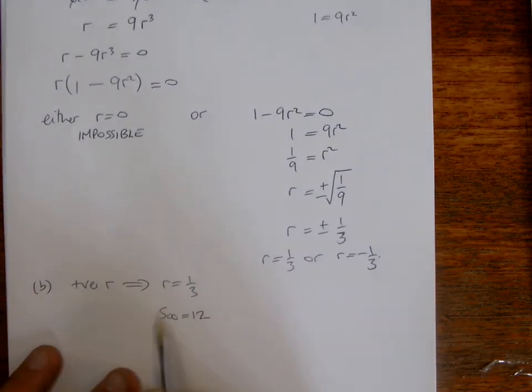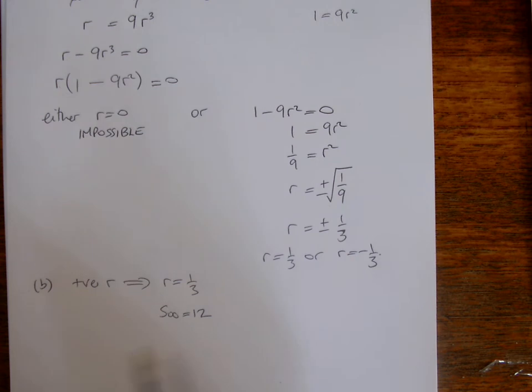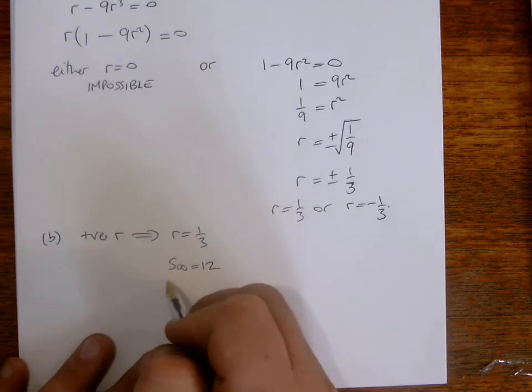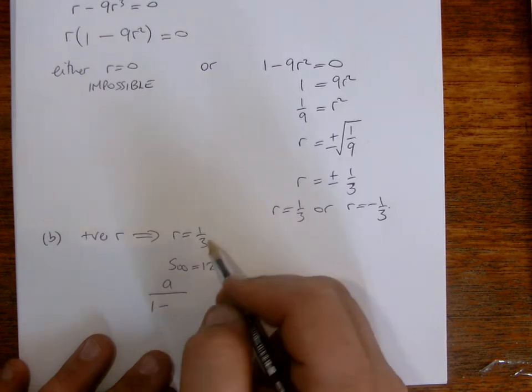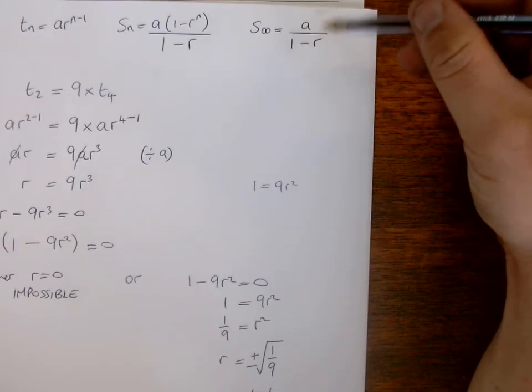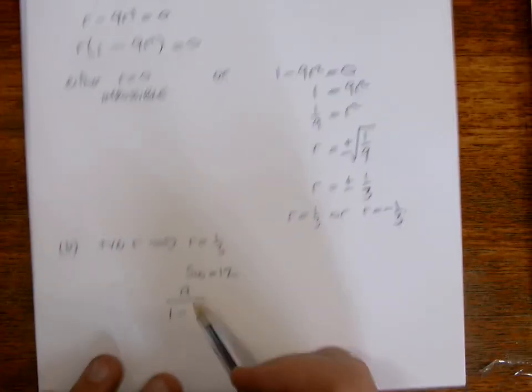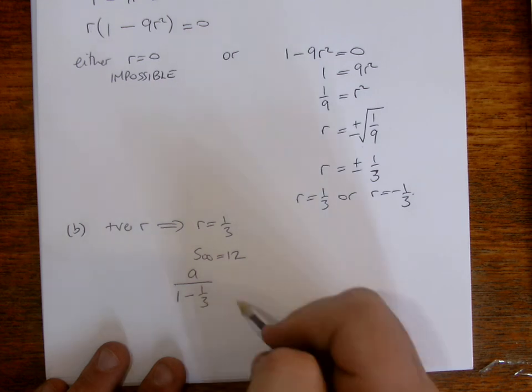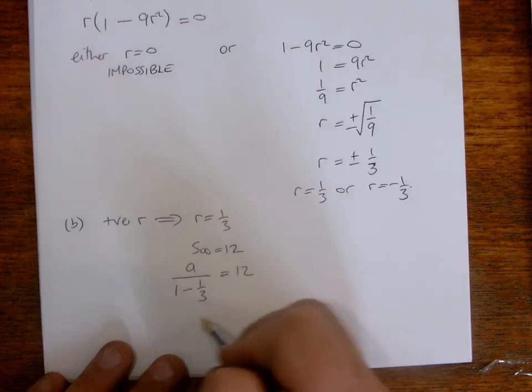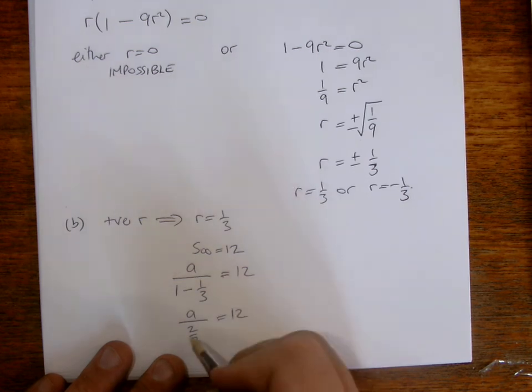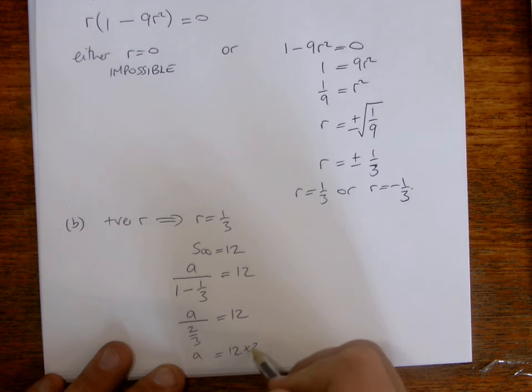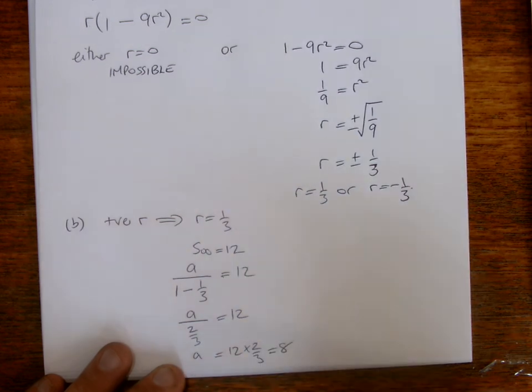Now you've got to ask yourselves, how are we going to use this here to establish the third term in the series? Well, if you think about it, we know what R is. What we don't know is what A is. So if we use the sum to infinity formula, A over 1 minus R. As we've got written up here, A over 1 minus R. Well, R is one third, sub it in. And we're told that's equal to 12. So A will be two thirds then on the bottom, equals 12. So take that two thirds over and multiply. And we get A to be 8.